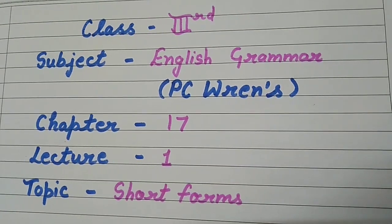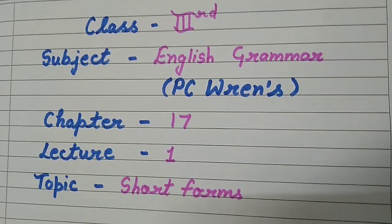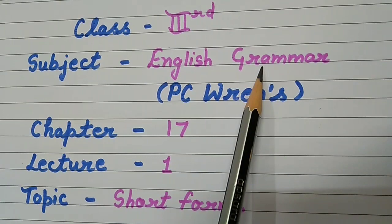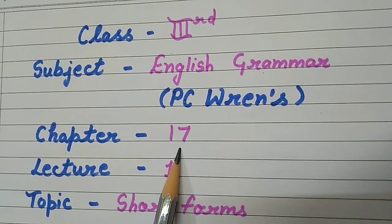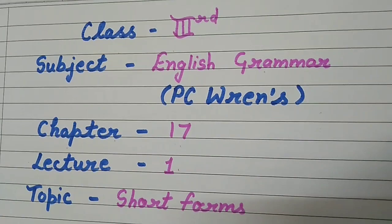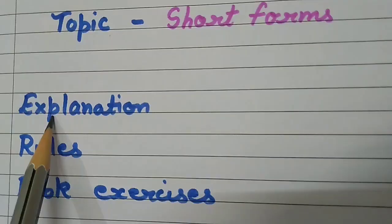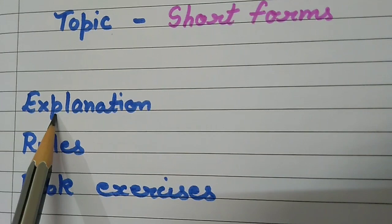Hello students, how are you all? Hope you are fine and safe at your place. So let's start today's class. Today's class is for class 3rd, subject English grammar, and the book name is P.C. Rance. So today we are going to start with chapter 17. We will study chapter 17, lecture 1, and the topic is short forms.